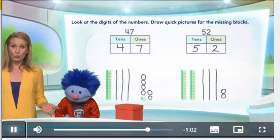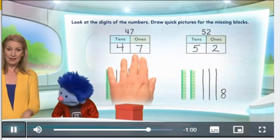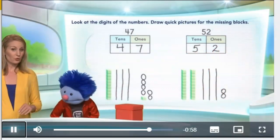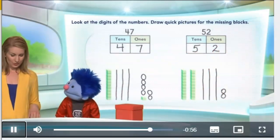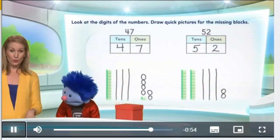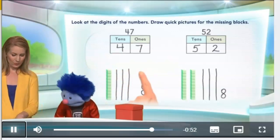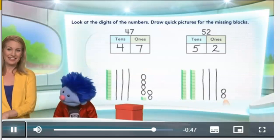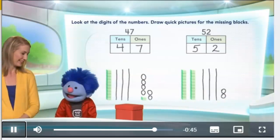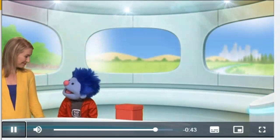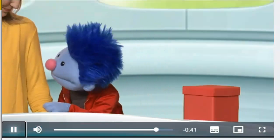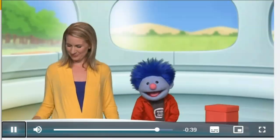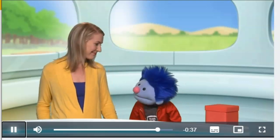Thank you. So what did we do? We showed forty-seven and fifty-two using tens and ones. So forty-seven is four tens and seven ones. And fifty-two is five tens and two ones. Well done. Thank you. That was just great, Professor Rena.